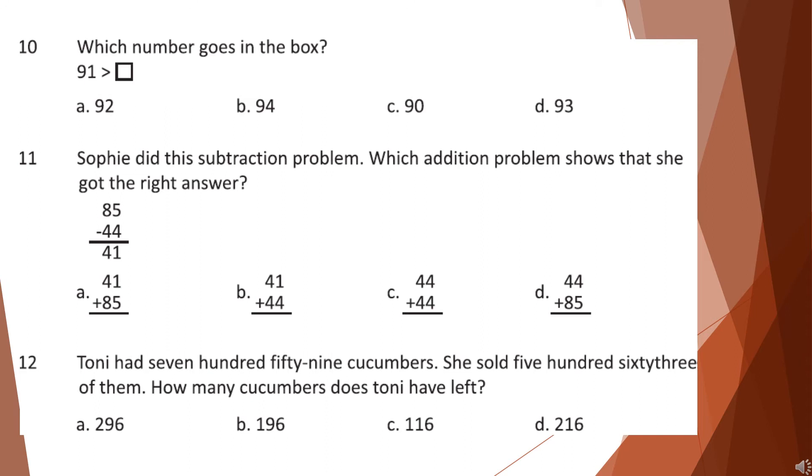Question 12: Tony had 759 cucumbers. She sold 563 of them. How many cucumbers does Tony have left?